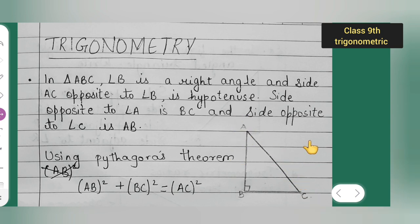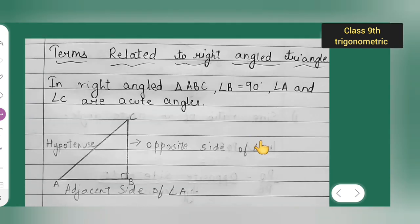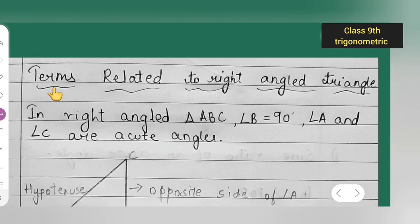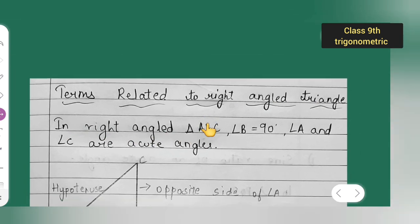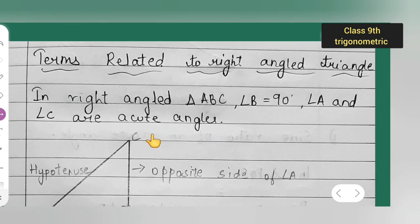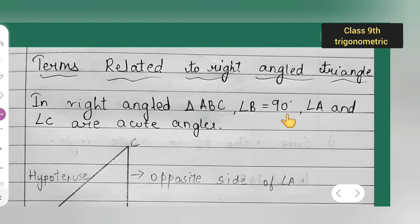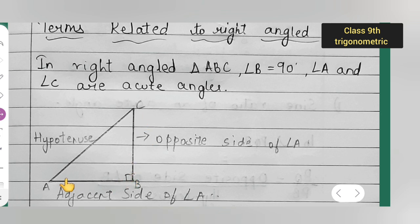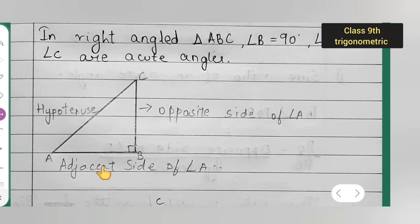Now let's see the terms related to a right angle triangle. In right triangle ABC, angle B equals 90 degrees, and angles A and C are acute angles. This side is your hypotenuse, this is the opposite side of angle A, and this is the adjacent side of angle A.